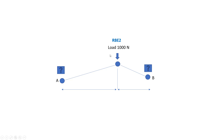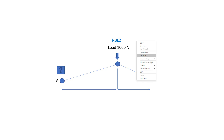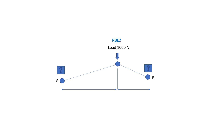The correct answer for RPE 2: it is 500 Newton at each node, because RPE 2 transfers the load equally to every connected node. Now, if I consider the same setup but as RPE 3, what happens instead?